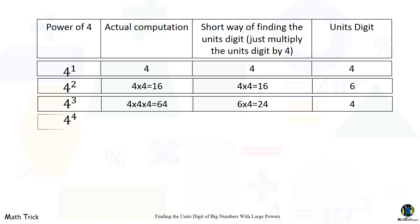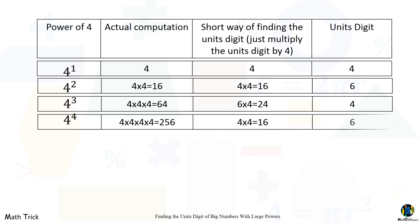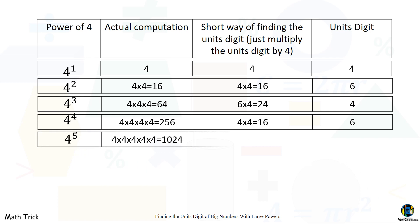Four raised to the fourth power is 256, so the unit's digit is six. If we continue raising the power of four, the same pattern continues — the one's digit will alternate between four and six.